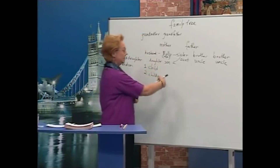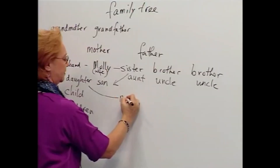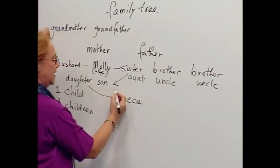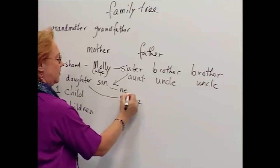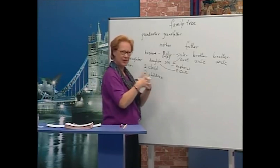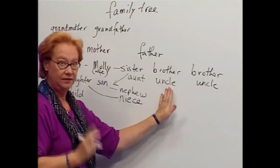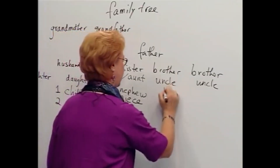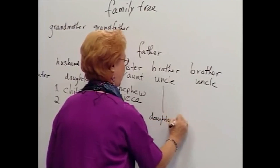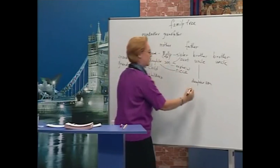Now, going this way — daughter is the niece. Niece is a girl. The son is nephew. Nephew. All right? It's very complicated, but we've got it. My brother has two children — a daughter and a son. My daughter and son are cousin.